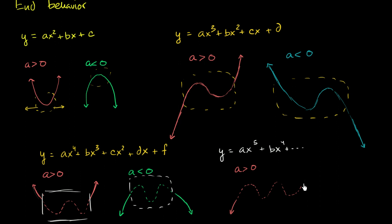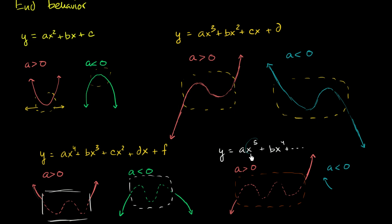Very similar end behavior when a is greater than 0, and very similar end behavior when a is less than 0. At a really negative value of x, it will be positive, because this part is going to be really negative but then multiplied by a negative a to get a positive. And for really positive values of x, it will be negative, because the a term is negative. What it does in between, we're not really thinking about here.